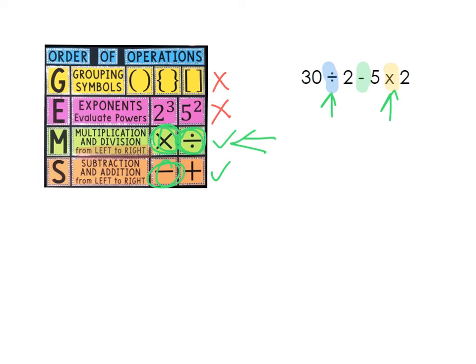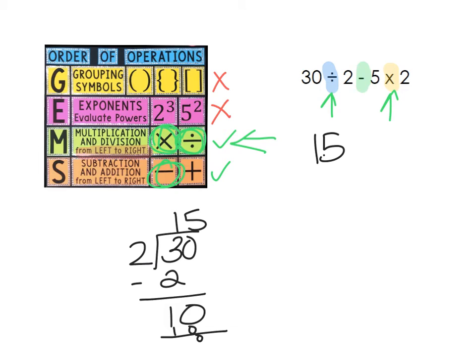So we have 30 divided by 2 and you can always go over to the side and solve the problem if you can't do that in your head. 2 goes into 3 one time. 1 times 2 is 2. Subtract, I have 10. 2 goes into 10 5 times 10 and I subtract and I'm left with 0. So I know my answer. First one is 15. Remember last video how I showed you I rewrite the problem. Now I just did this problem. So I need to rewrite the rest. Minus 5 times 2.